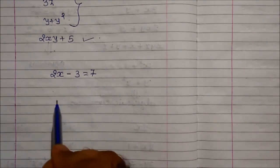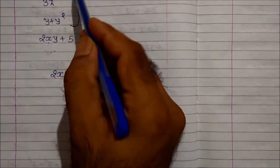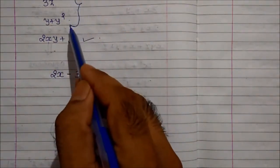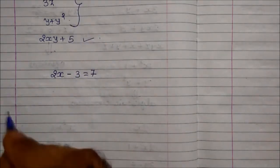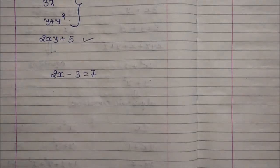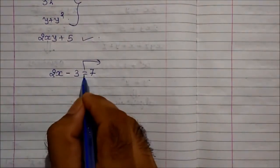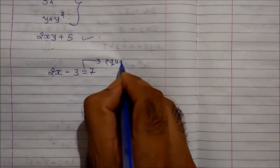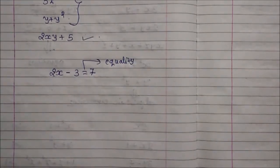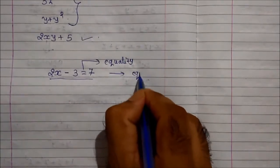2x-3 is equal to 7. So this now becomes an equation. These were the examples of algebraic expressions, whereas this is nothing but the example of an equation. So let's understand the parts of an equation. Very first, we should have an equality sign, or 'is equal to' sign. This whole is known as an equation.